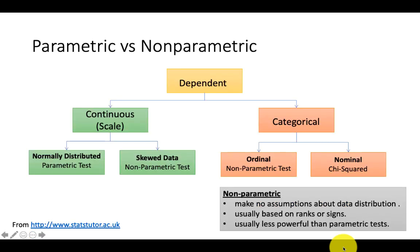When we talk about parametric and non-parametric, it depends on the scale of your dependent variable — whether it's continuous or categorical. If it's a categorical or nominal scale, you can just do a chi-square. If it's ordinal, it has to be a non-parametric test. For the continuous scale, if it's normally distributed, you can proceed with the parametric test, which is more powerful and more predictive than a non-parametric test. If you have skewed data — skewed left or right — then you have to go for non-parametric options.